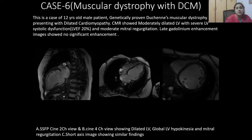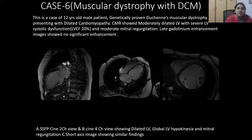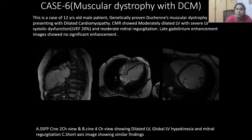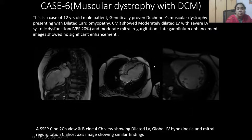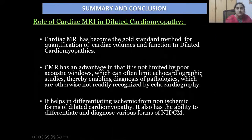Case 6 — Duchenne's muscular dystrophy: a 12-year-old male with genetically proven Duchenne's muscular dystrophy presented with DCM. Cardiac MRI showed moderately dilated left ventricle with severe LV systolic dysfunction and ejection fraction of approximately 20%, and moderate mitral regurgitation. Late gadolinium enhancement images showed no significant enhancement. Two-chamber and four-chamber views show dilated left ventricle, global LV hypokinesia, and mitral regurgitation. Short-axis imaging showed the same findings.